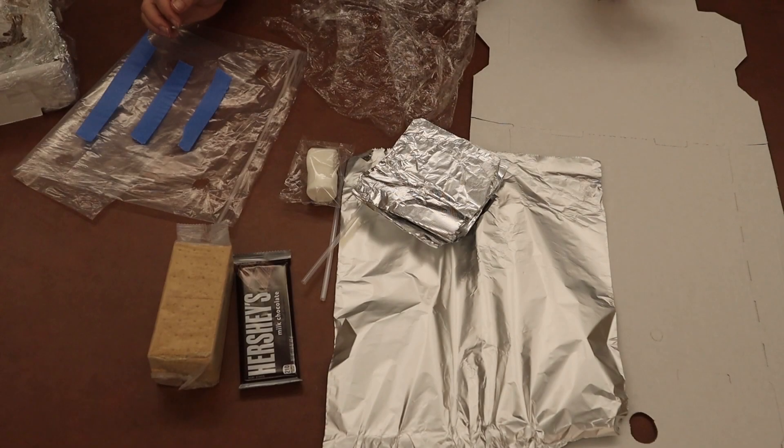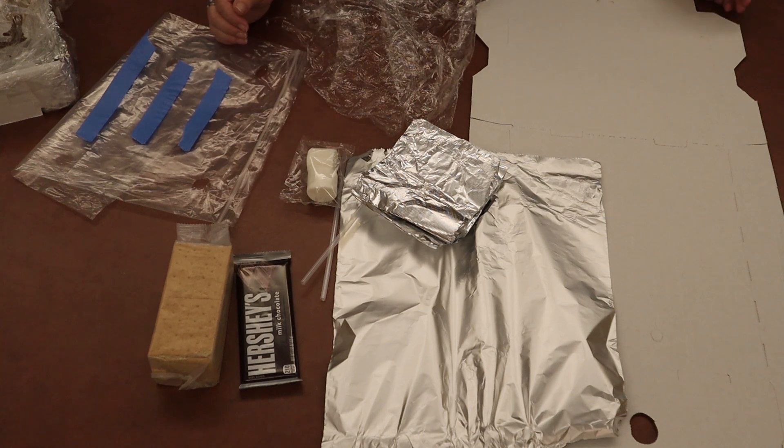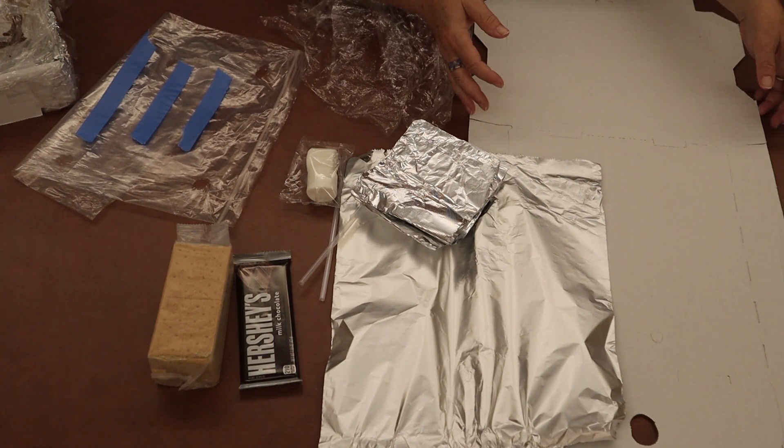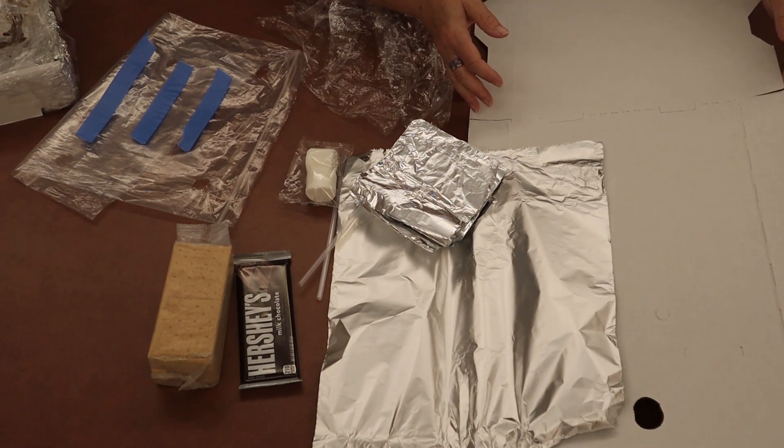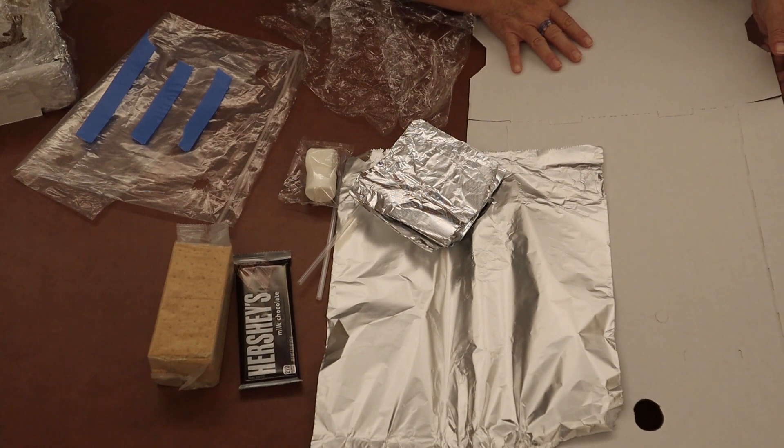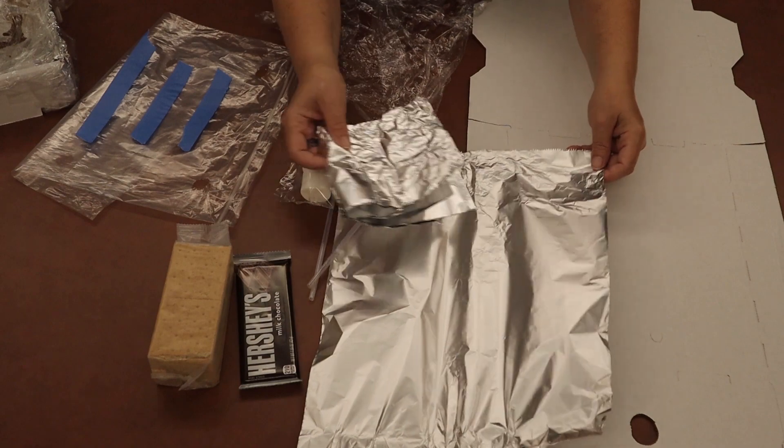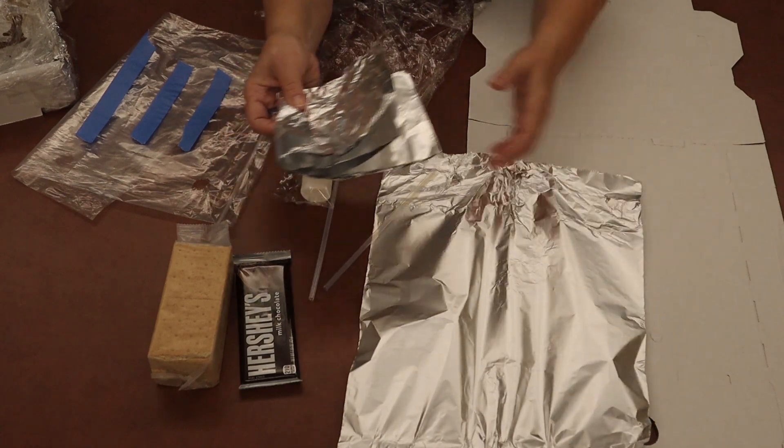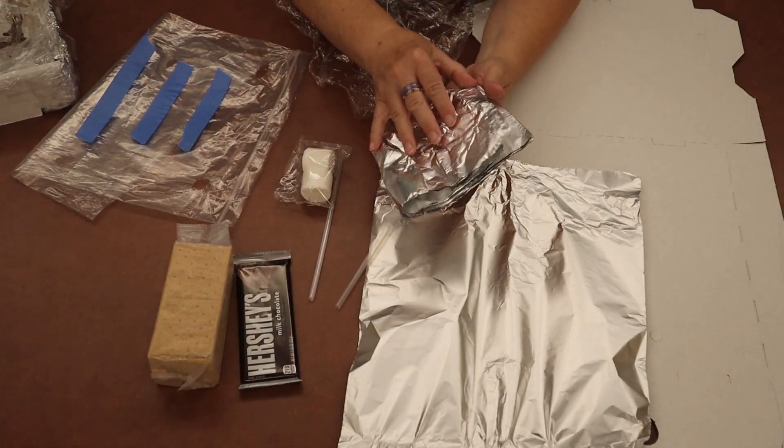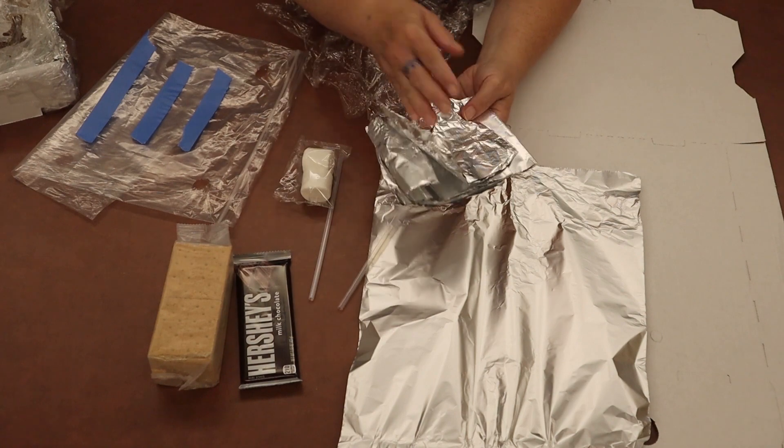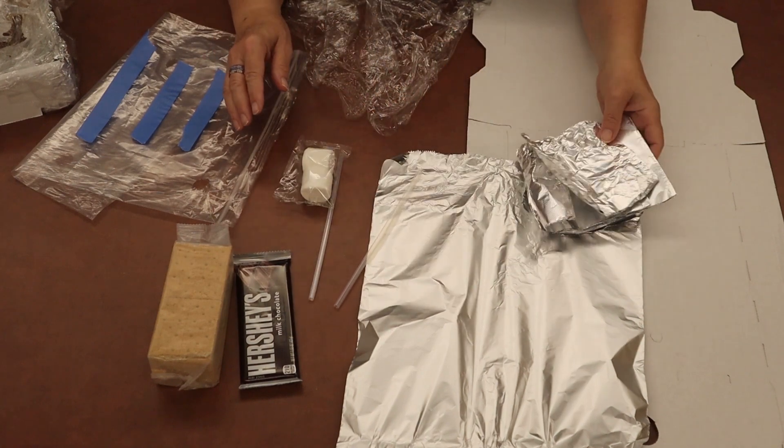In your take and make bag, there's going to be several different things we'll need for the project. The first thing you'll have is your pizza box, which we'll have to put together. Foil, which you will either have sheets of foil, the bigger sheets, or you'll have some smaller sheets. They'll both work the same.